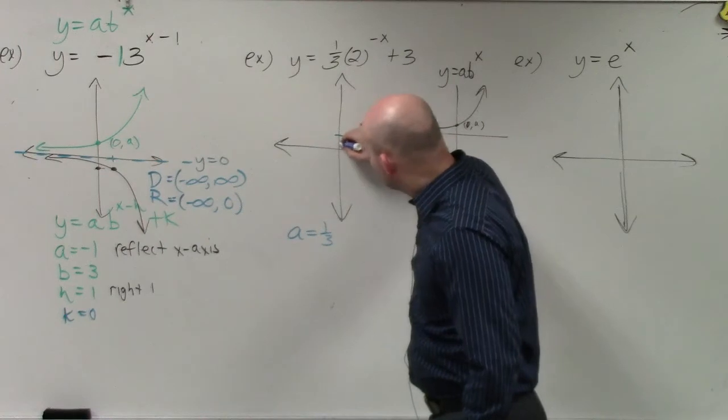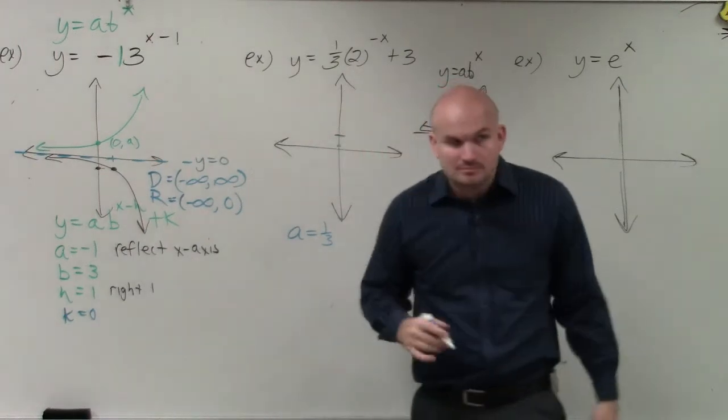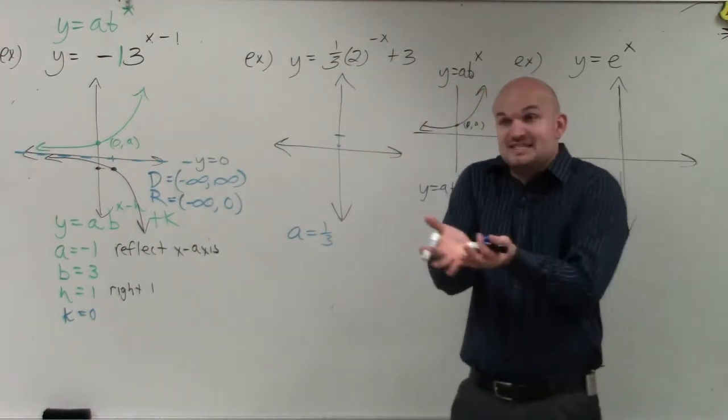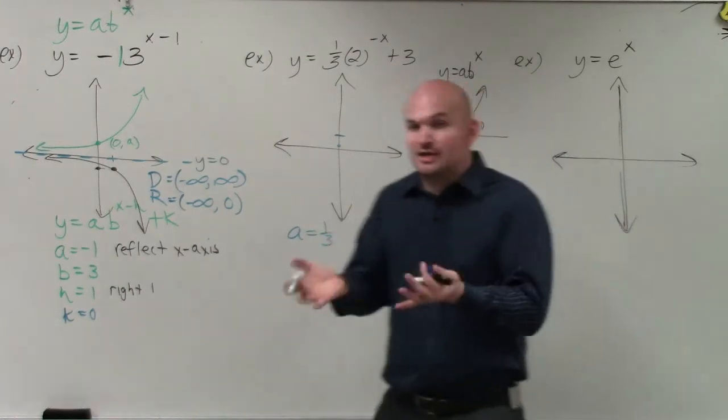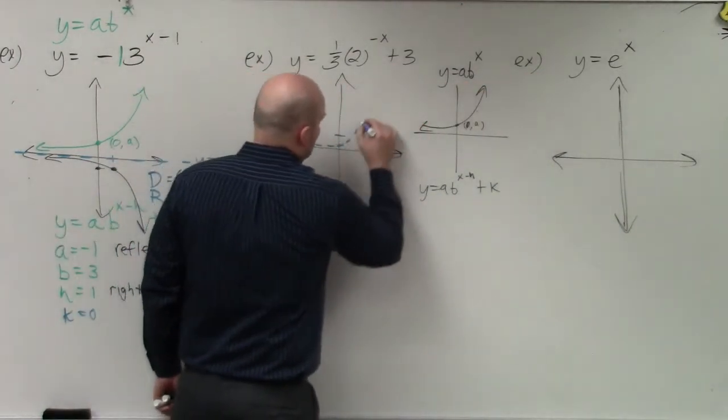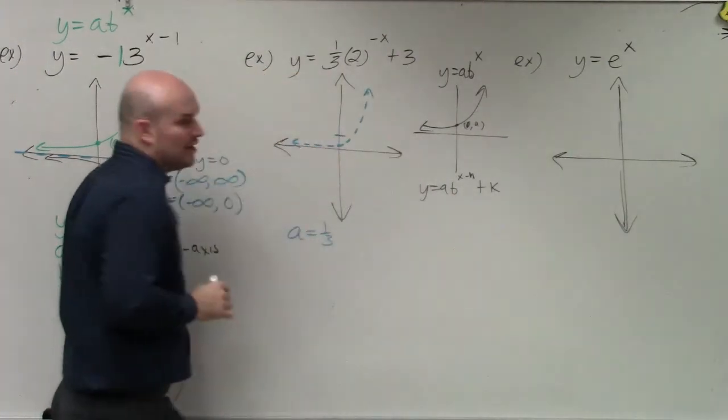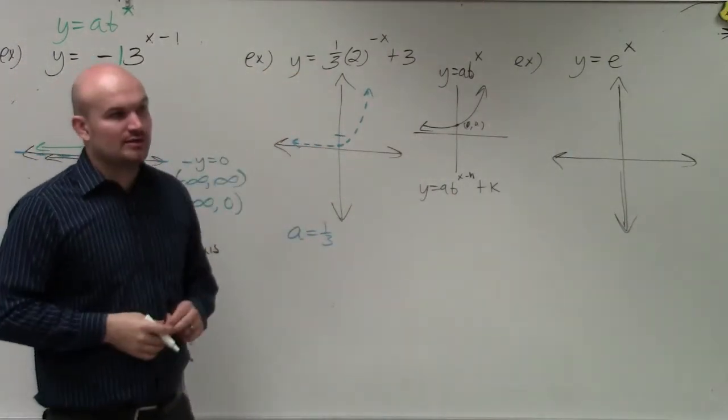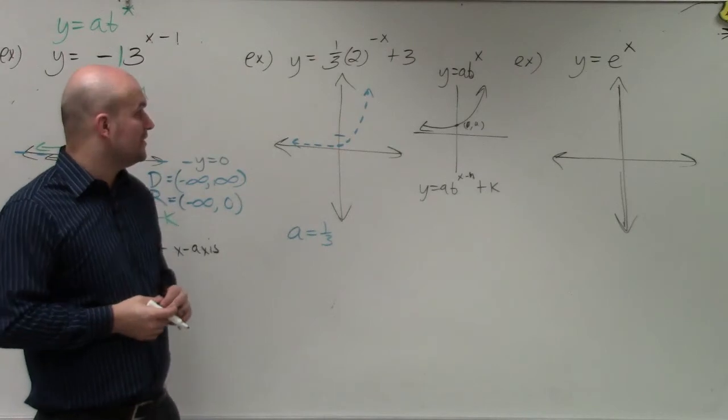So therefore, I know the graph is going to cross at 1/3. I mean, at least I know the initial graph without doing any other transformations. I could say the graph will cross at 1/3. So what I'll do is if that was my only value, then that's what the graph would look like. It would cross at 1/3 or 0 comma 1/3.